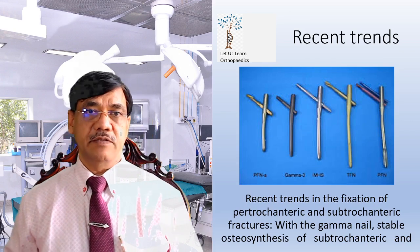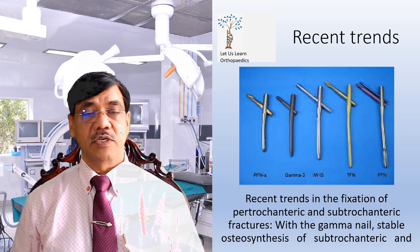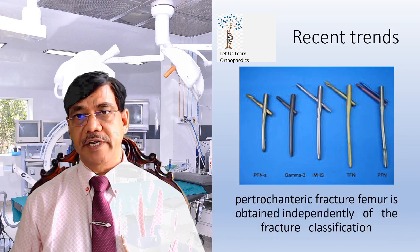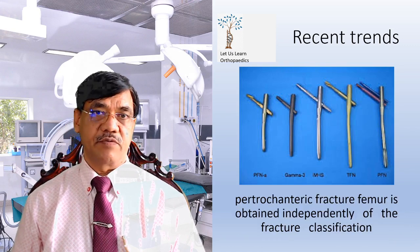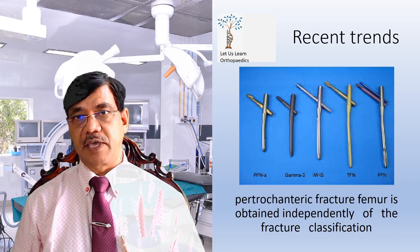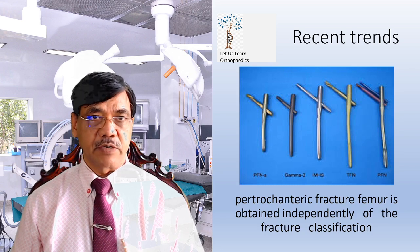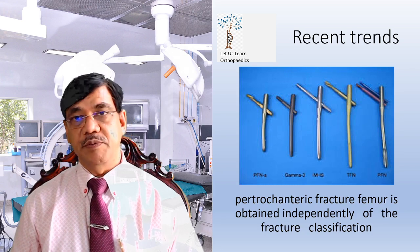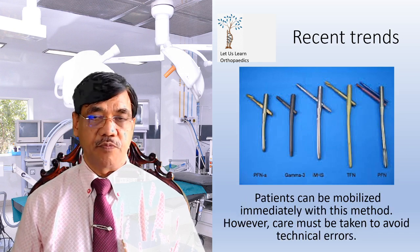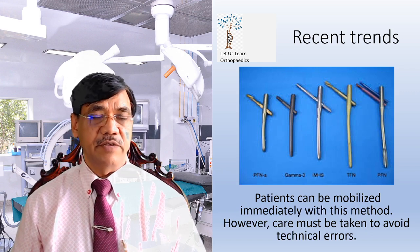The recent trend in fixation of peritrochanteric and subtrochanteric fractures is the gamma nail, which provides stable osteosynthesis of subtrochanteric and peritrochanteric femur fractures independently of fracture classification. However, people are now moving towards the PFN and its other variants. Patients can be mobilized immediately with this method, but care must be taken to avoid technical errors.